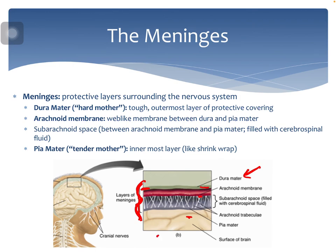Between the dura mater and the cortex, we have the arachnoid membrane — a web-like membrane. It contains what we call the subarachnoid space, which looks like spider webs, filled with cerebrospinal fluid and fibers that add a protective layer. Then finally you have the pia mater, which sits directly onto the cortex — the innermost layer, translated as 'tender mother.' It's a really delicate layer on top of the cortex, very much like shrink wrap and very easy to rip.